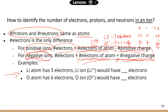Practice questions: lithium and oxygen. Lithium originally has three electrons. Lithium can lose one electron and become a positive ion, so it's going to be three minus one, which equals two. You will find two electrons in the lithium ion.